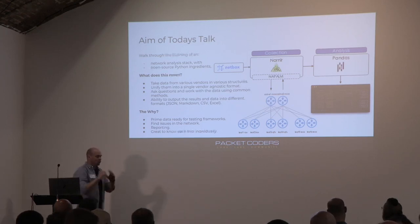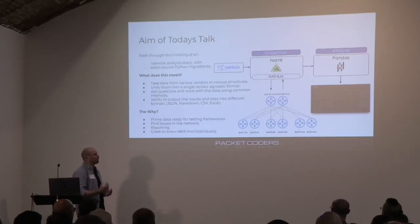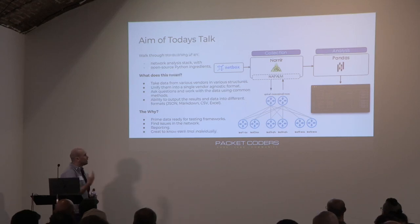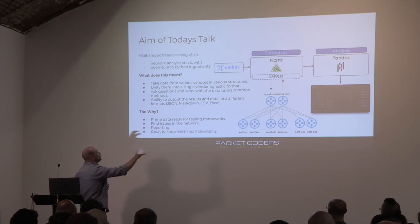Within our topology we've got Nexus devices, IOS devices, Junos, and EOS — lots of different output structures. We're going to get all of that data back through NAPALM, with Nornir running that NAPALM layer. Once we've got the data from the collection process, we're going to pass it over to Pandas, get it into a data frame, do some analysis, and work with it in various ways — for example, outputting to JSON, Markdown, etc.